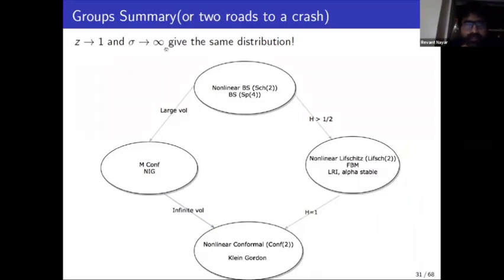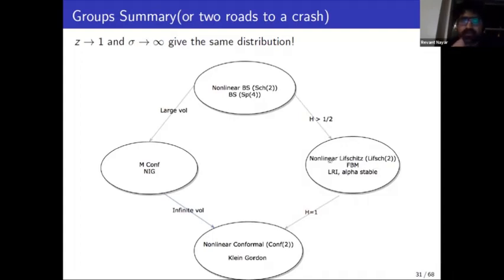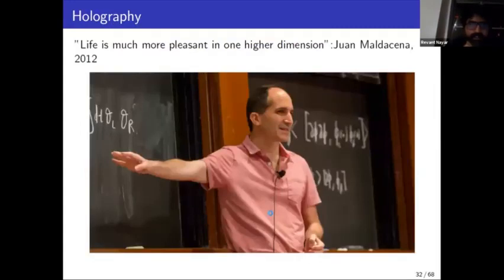The basic summary of this group-theoretic description: we've seen the interplay between four groups. The non-linear Black-Scholes equation is described by the Schrödinger group. In the large volatility limit without setting it to infinity, you get the massive conformal group. At infinite volatility you get the 2D conformal group. From the other side, through the Lifshitz group, you can dynamically vary z from two to one, or the Hurst exponent from one-half to one, and again approach crash dynamics.